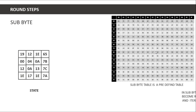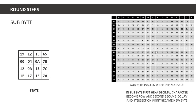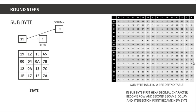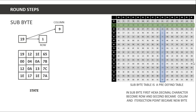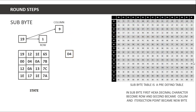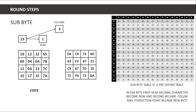Sub byte uses the same predefined S-box table used in key generation. The first hexadecimal character becomes the row and the second becomes the column; the intersection point becomes the new byte. For example, row 1 and column 9 gives D4. We apply this substitution to every byte in the state — for values like 1, 2, 1E, 65, 55 — and get the sub-byte result state.